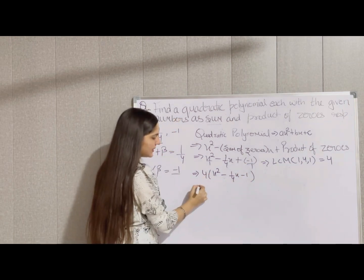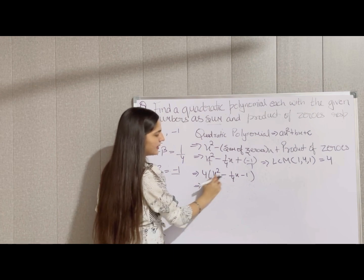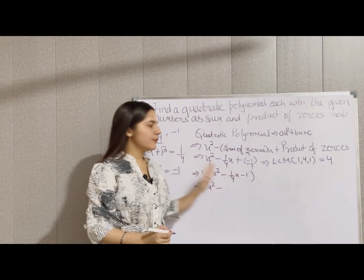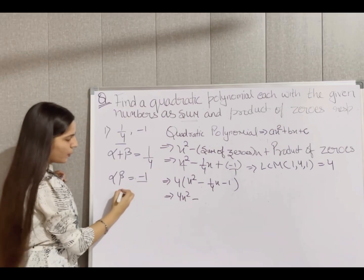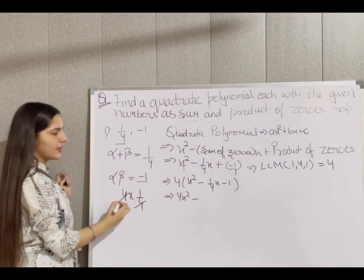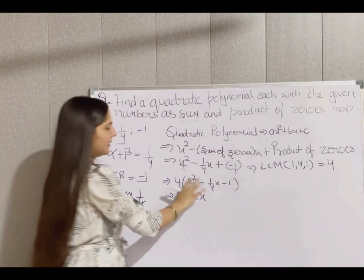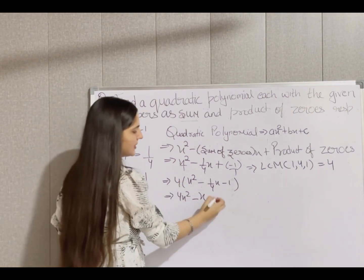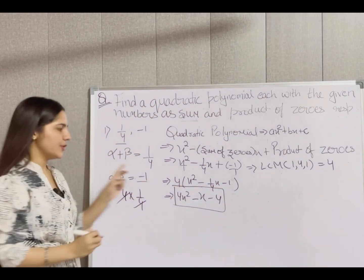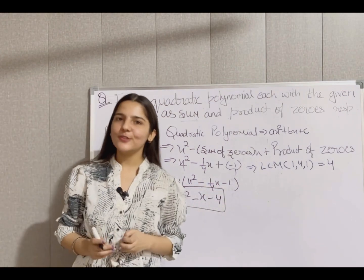Multiplying through by 4: 4 × x² gives 4x², and 4 × (1/4) cancels to give x, and 4 × (-1) gives -4. So the required quadratic polynomial is 4x² - x - 4.